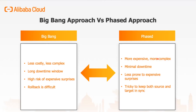Migration methodologies. In essence, there are two types of approach to database migration. Number one is the Big Bang approach, and number two is the phased approach. The Big Bang approach is a lot simpler and less costly, because there's no need to maintain two copies of the environment. However, the downtime could be quite long, and depending on data size, it might not be feasible. With a Big Bang approach, there's a high risk of getting expensive surprises with workload, performance issues, or some features that you needed not being there.